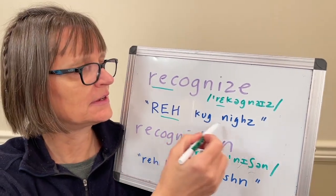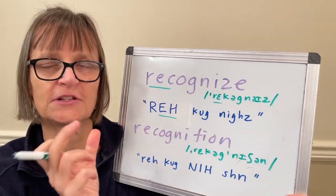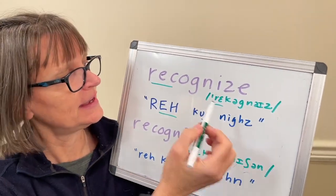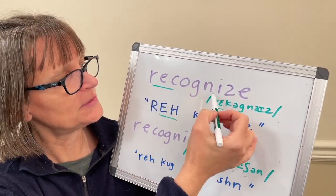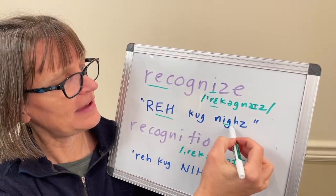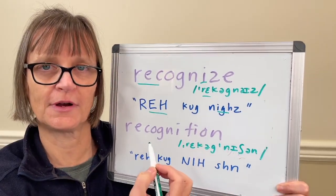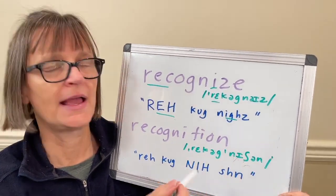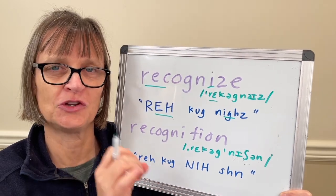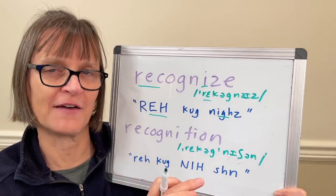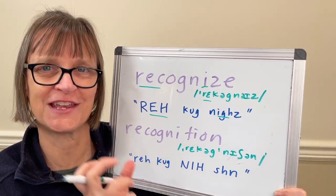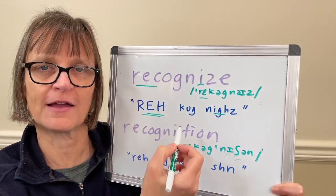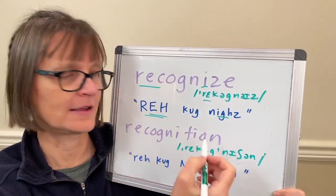Recognize. The '-cognize' syllables are a little bit shorter and may have reduced vowels. In 'recognize' we do have a clear 'I' vowel — like in 'night' or 'mine' — in the final syllable. Be careful not to stress it; you don't want 'reCOGNIZE' — don't put length there. Just keep that clear vowel, but your length happens on the first syllable. Rec. Recognize.